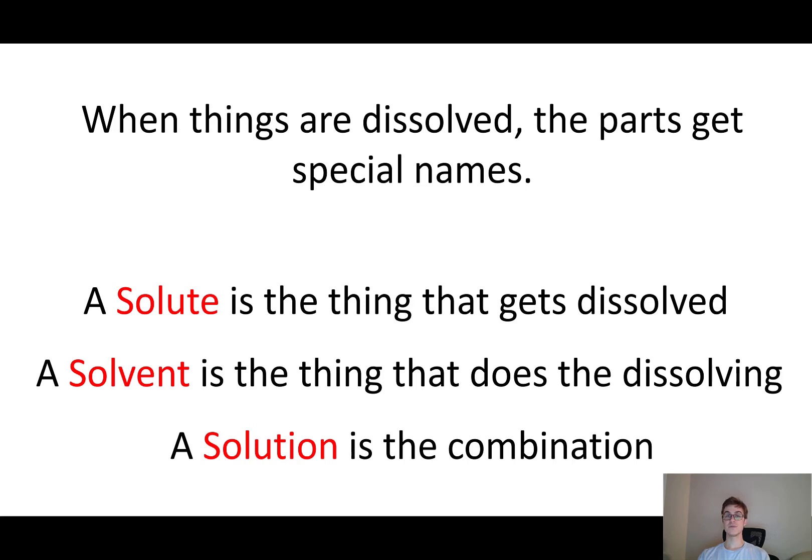In summary, when things are dissolved, the parts get special names. The solute is the thing that gets dissolved. The solvent is the thing that does the dissolving. It's normally water. And a solution is the combination of both. I hope that was helpful.